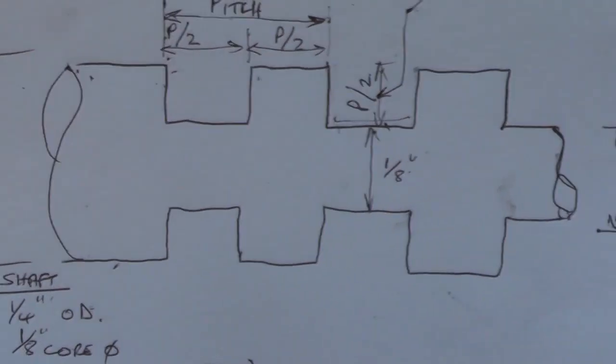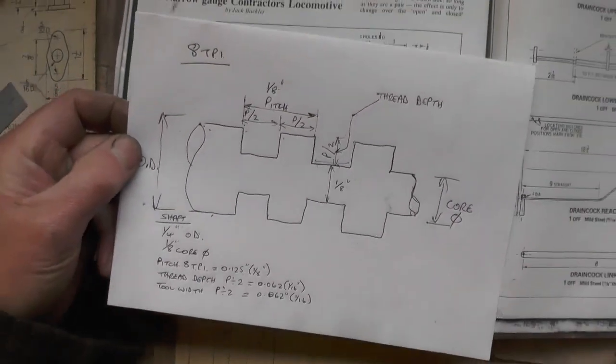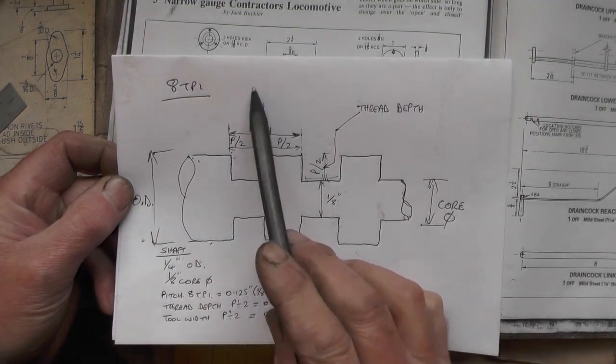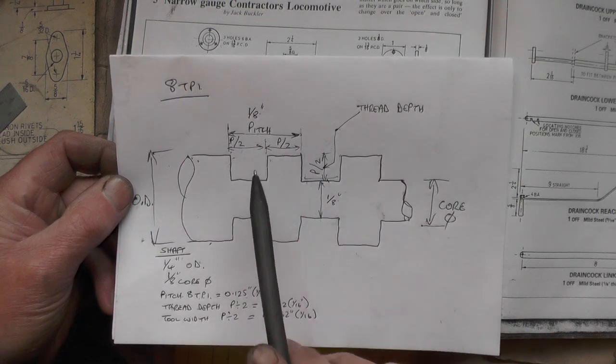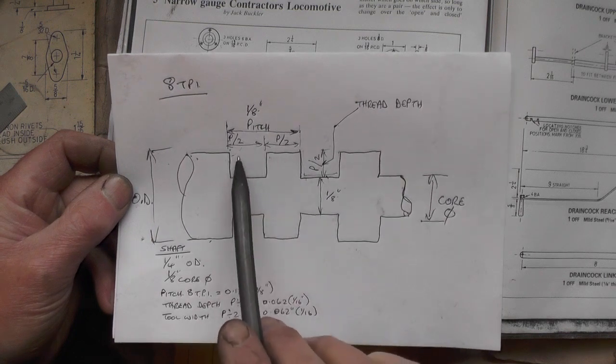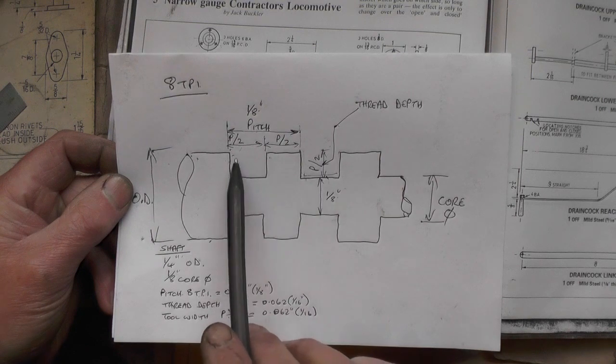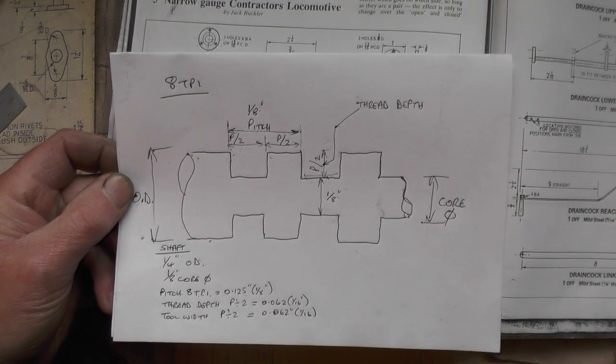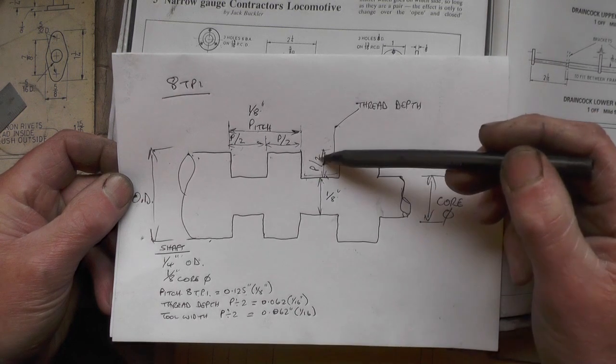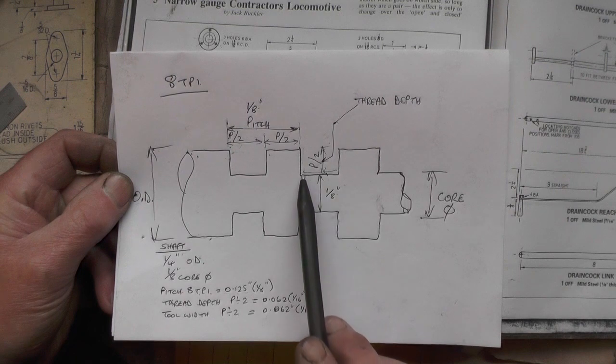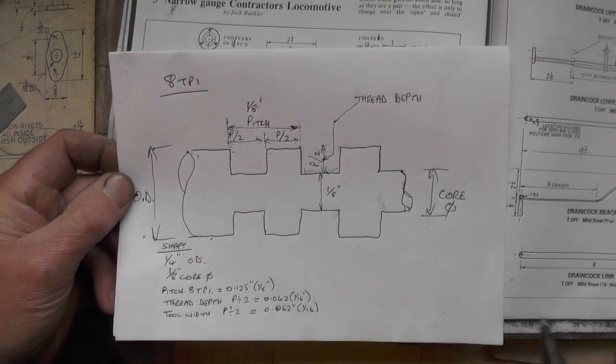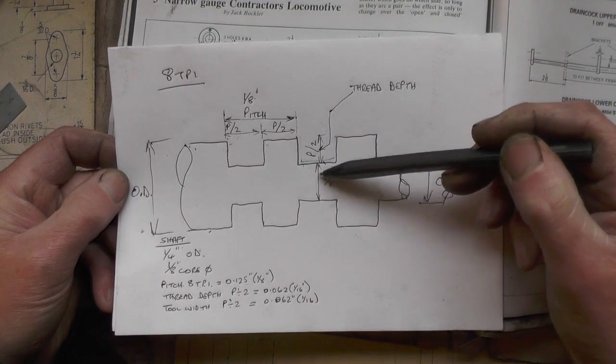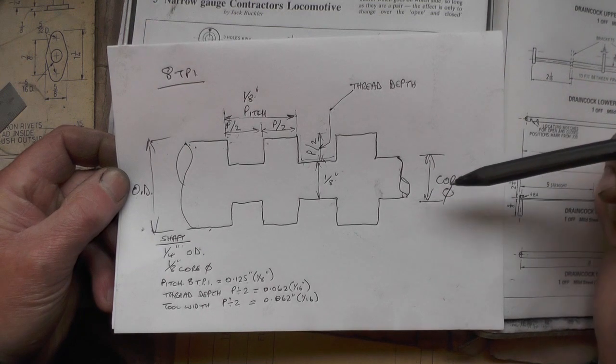I'll just explain how you work the dimensions out for a square thread for anybody that doesn't know. So I'm doing an 8 threads per inch. The OD is a quarter, so the pitch of the thread is 8 divided into 1 inch, which is an eighth, so 0.125 thousandths is the pitch. Then to get the components of the thread, that's the thread and the gap, it's pitch divided by 2, so that's a sixteenth. You've got the depth of the thread, which is again pitch divided by 2, P divided by 2, so the thread depth is a sixteenth. So you've got a sixteenth deep, a sixteenth across, and a sixteenth up. When you take into account the depth of the thread, you're taking the depth out on both sides. So that's two sixteenths, which is an eighth. That leaves you one eighth in the middle for your core diameter. So that's the size of the drill I've got to put up the nut to get a tool in to cut this thread.